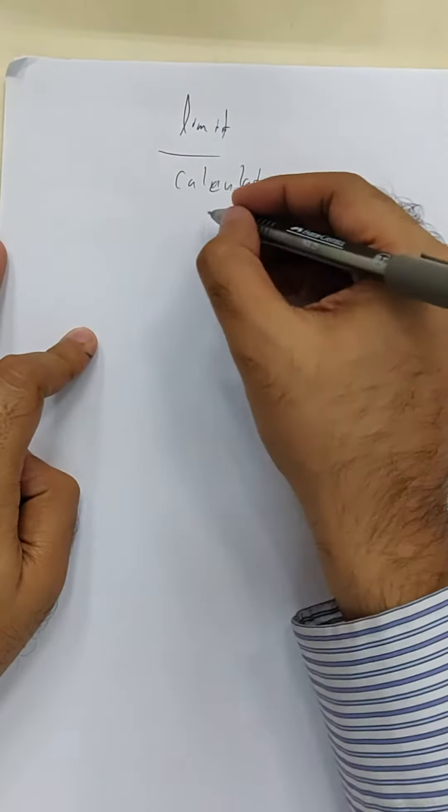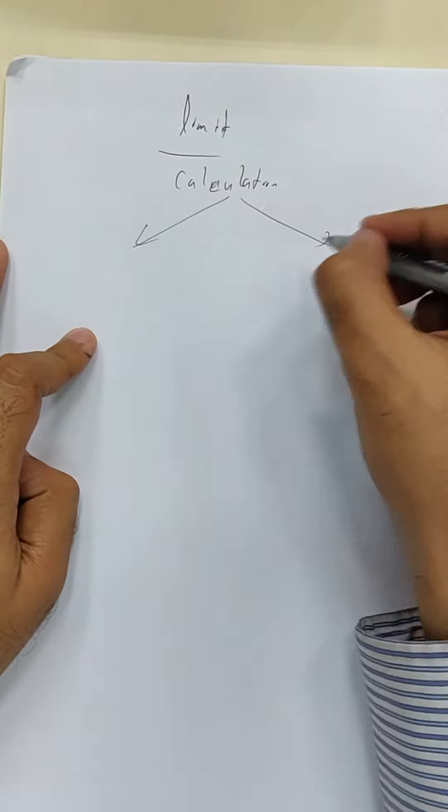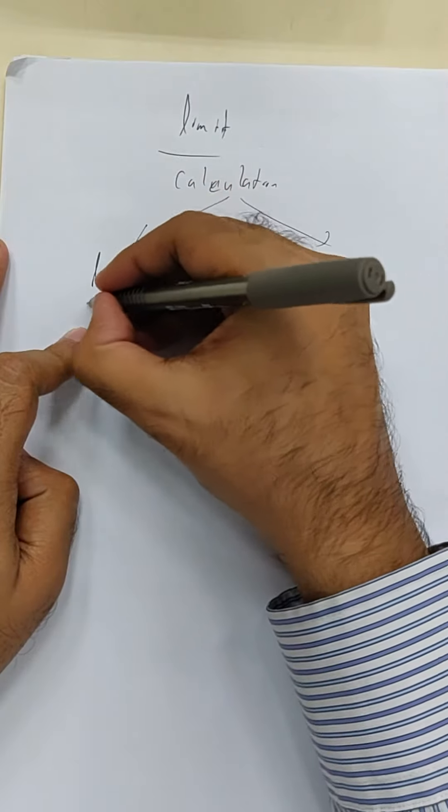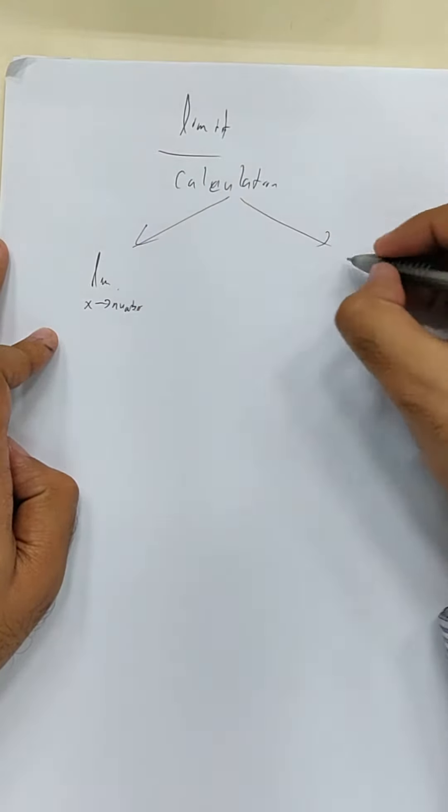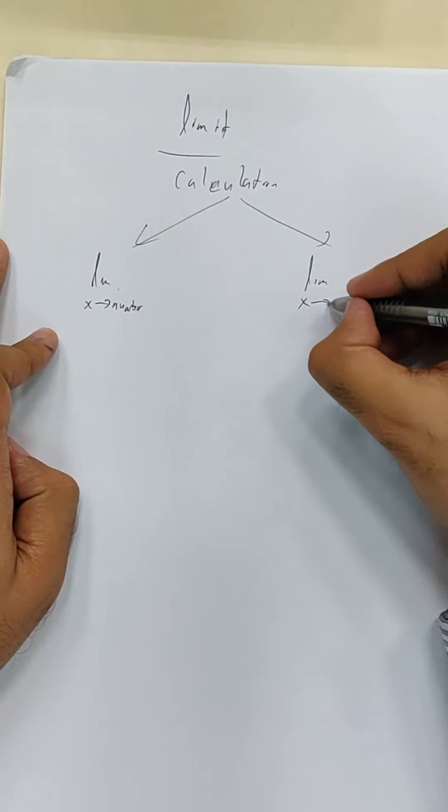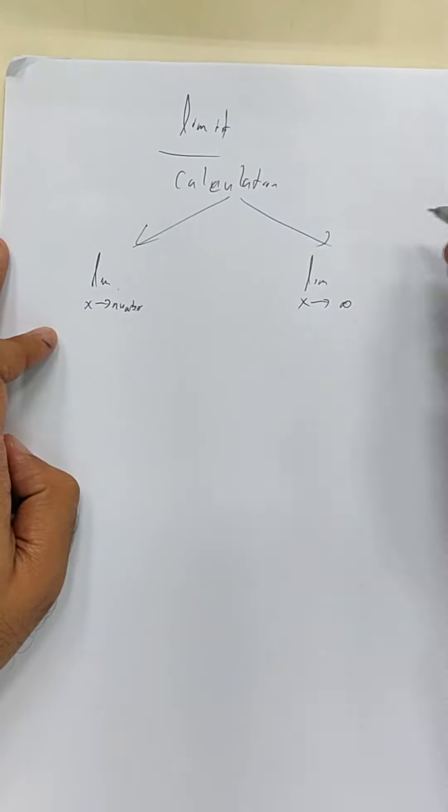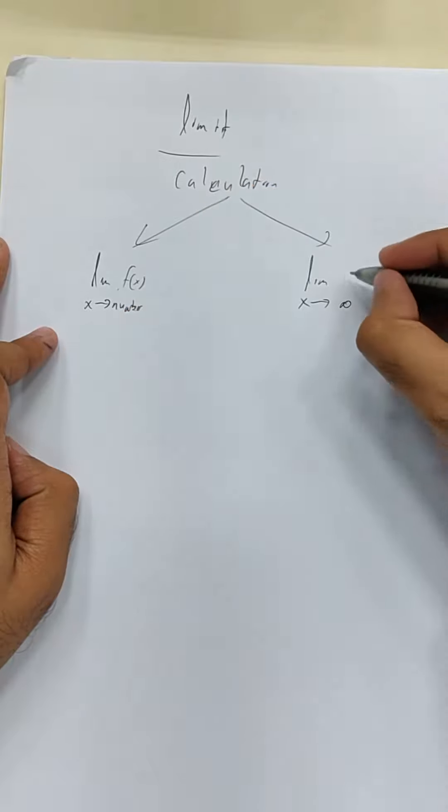Okay, limit. What have you learned about the calculation so far? Limit x approaching a number, or limit x approaching infinity. How do they differ from each other?